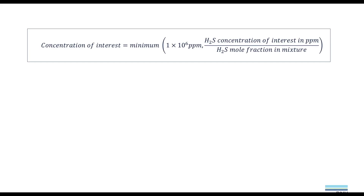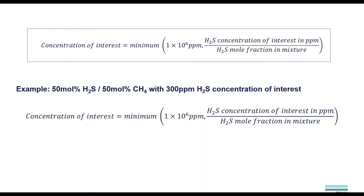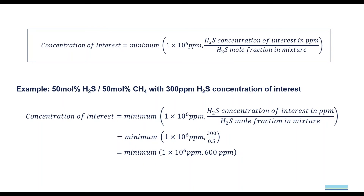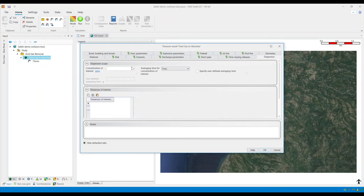However, if you are modeling a mixture and you would like to determine the concentration of interest to use, then this formula needs to be applied. For example, if we have a mixture of hydrogen sulfide and methane with 300 ppm of hydrogen sulfide, then by plugging in the values and choosing the minimum between 1×10⁶ ppm and 600 ppm, we will be using 600 ppm. And within the pressure vessel window, in the dispersion tab, this 600 ppm needs to be specified within the concentration of interest field.